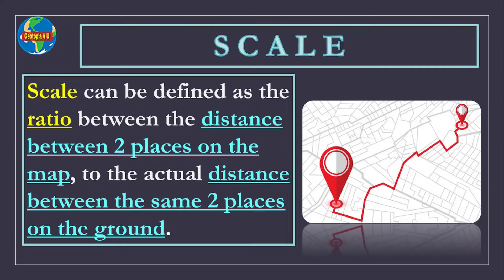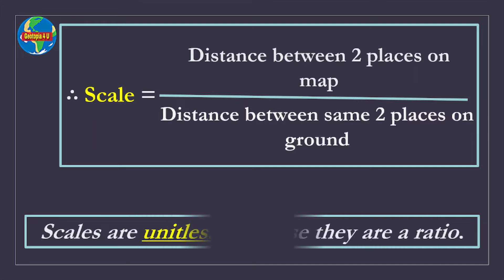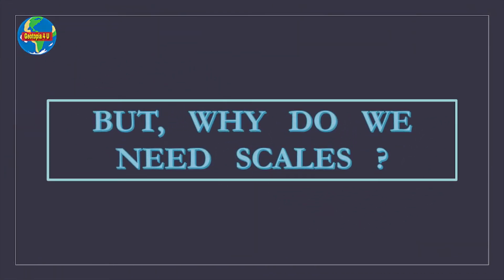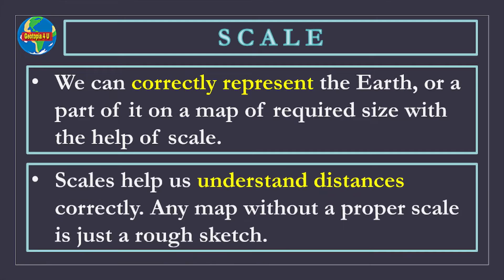A scale can be defined as the ratio between the distance between two places on the map to the actual distance between the same two places on the ground. Scales are unitless because they are a ratio. But why do we need scales? We can correctly represent the earth or a part of it on a map of required size with the help of scale. Scales help us understand distances correctly. Any map without a proper scale is just a rough sketch.